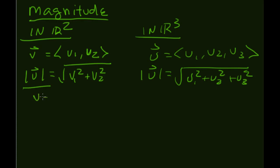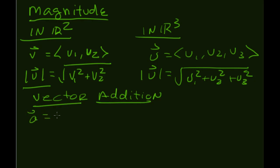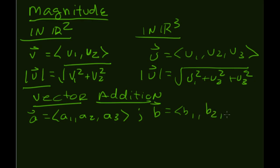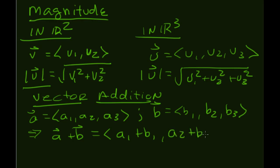We can also define vector addition in terms of components. Let a be the vector (a1, a2, a3) and b be the vector (b1, b2, b3), both in R3. Then a plus b is simply (a1 plus b1, a2 plus b2, a3 plus b3). Addition is done component-wise — nothing much of a mystery there.